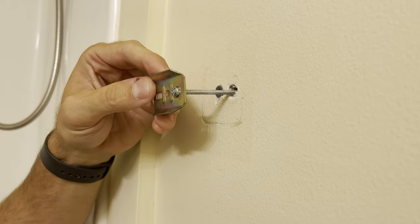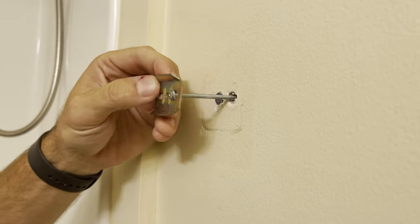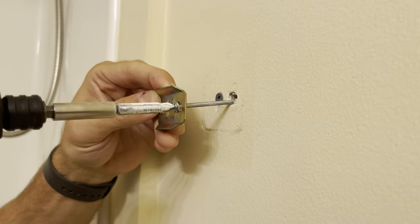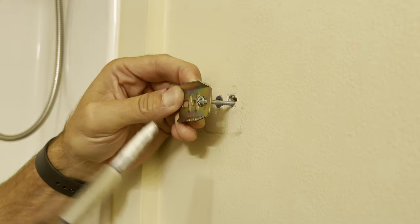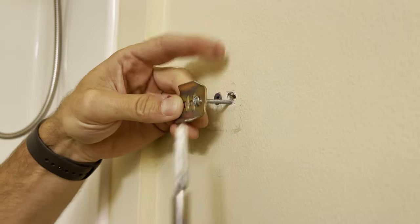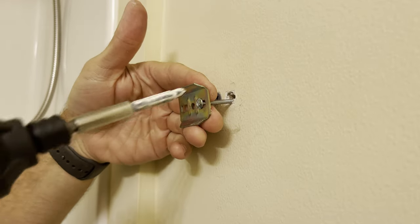Once it's in there, we can tighten it down like so. When you're tightening it down, if you pull out on the bracket, it'll pull the back of that up against the back of the wall to keep it from spinning.